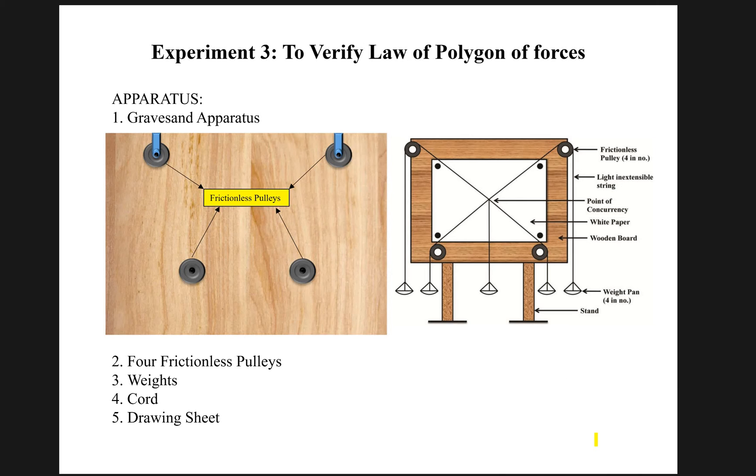This is the experimental setup. You will need a force board or a Gravesand apparatus like in the previous experiment. Two pairs of pulleys - in this case you will be needing four pulleys mounted on the force board. In the previous case we considered only two pulleys if you remember. You will also be needing weights, cords or strings, and a piece of drawing sheet.